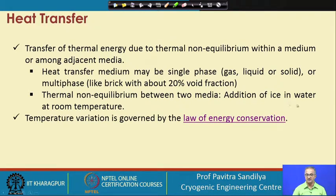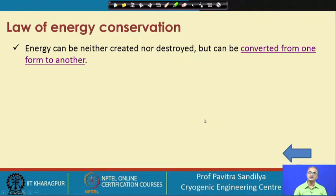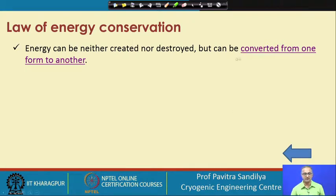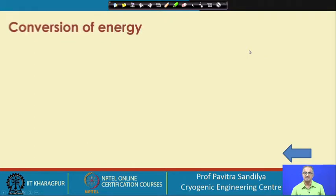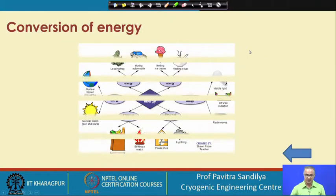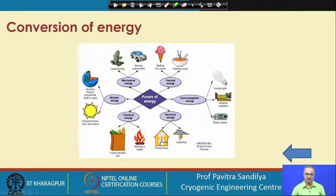The temperature variation is governed by the law of energy conservation, which says that energy can neither be destroyed nor created. But it can change its form — it can be converted from one form to another. We can see this in our day-to-day life: there are different forms of energy like mechanical energy, thermal energy, electromagnetic energy, electrical energy, chemical energy, and nuclear energy.